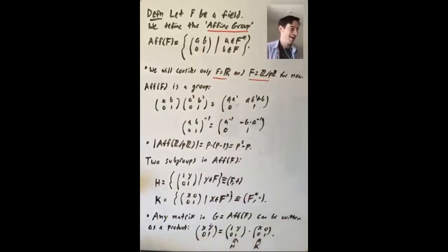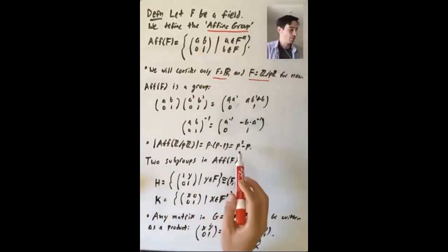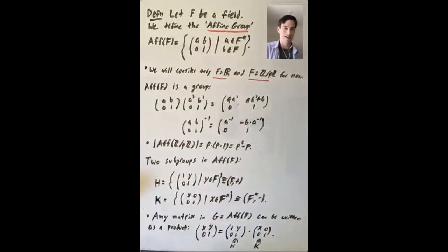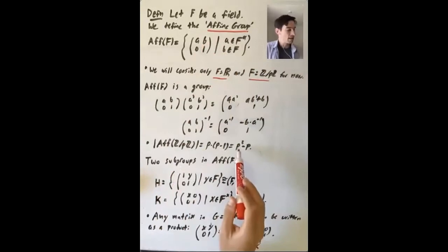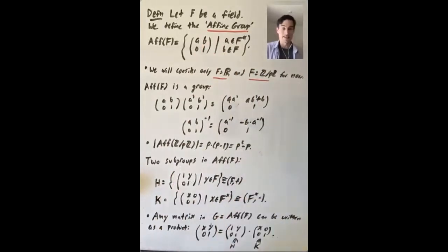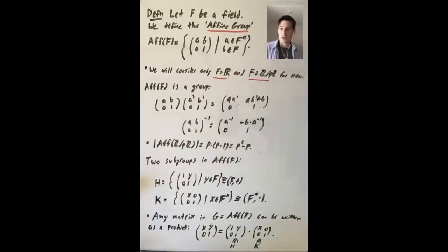Thinking about some examples: when p equals 2, this group has size 2² - 2 = 2, so it's cyclic — there's just the identity matrix and one other element. When p equals 3, this group has size 9 - 3 = 6. We've already talked about the classification of groups of order 6, so you can ask yourself which one this is.